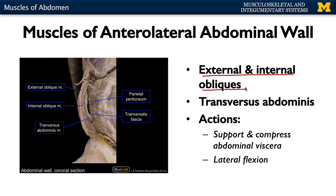Deep to the internal obliques is your transversus abdominis — as the name indicates, the fibers run transversely. The main action of these muscles is to support and, during contraction, to compress the deep abdominal viscera associated with the gastrointestinal system. Additionally, these muscles play a role in lateral flexion of the abdomen, such as when doing an oblique crunch.